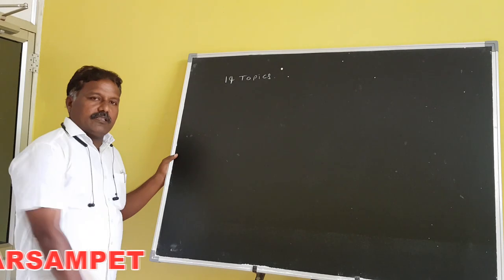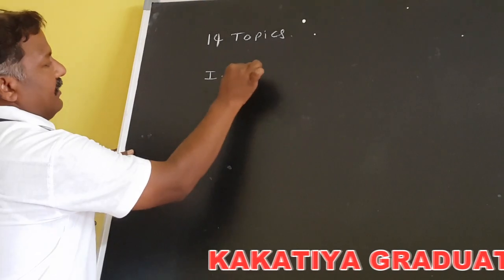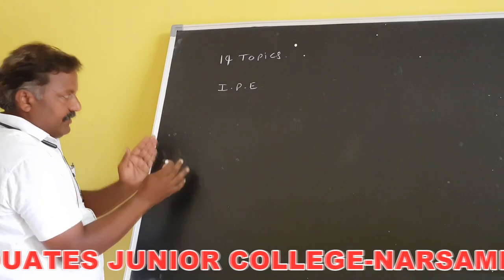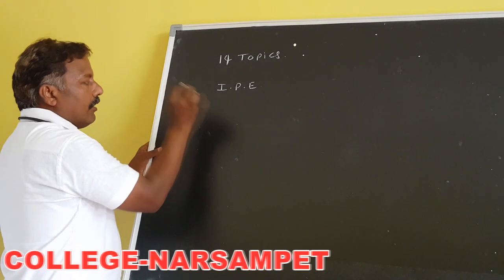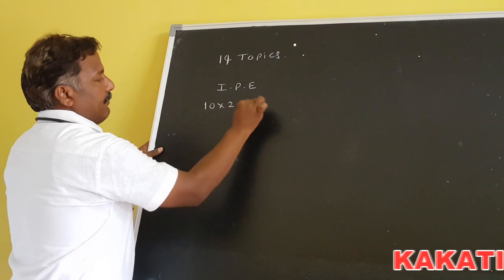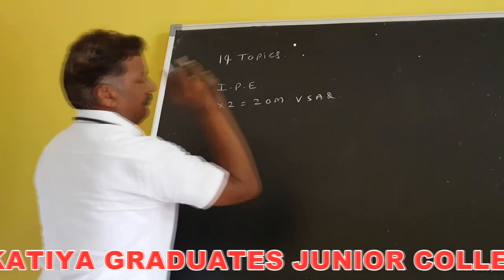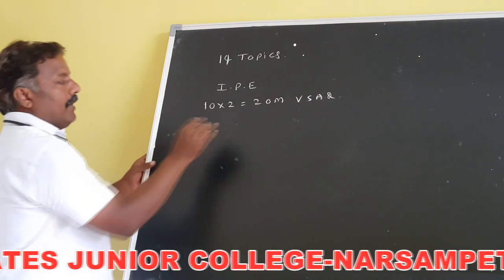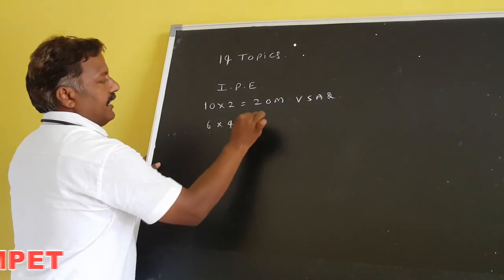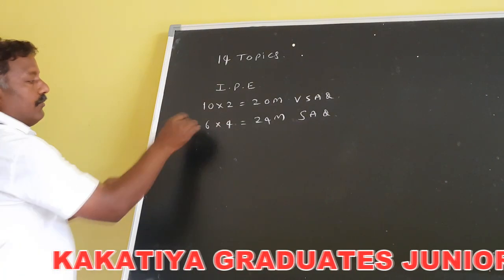Out of these 14 topics, the intermediate public examination question paper model is most important. For physics, there are 10 two-mark questions with no choice — that's 10 × 2 = 20 marks for very short answer questions. Next, for four-mark questions, six out of eight questions are attempted: 6 × 4 = 24 marks — these are called short answer questions.